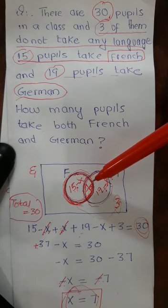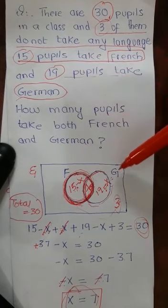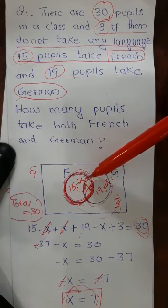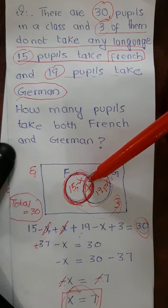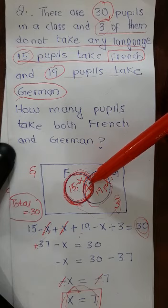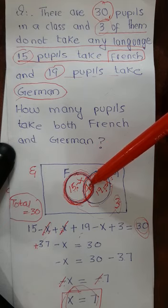We have been given the information that 15 pupils take French and 19 pupils take German. We need to start from the intersection part to fill this Venn diagram. In this intersection part — the part which belongs to both French and German — we don't know how many students are studying both. So, when we don't know the number of students in this part, we take it as X. Let X be the number of students studying both French and German.